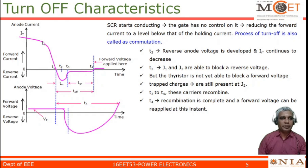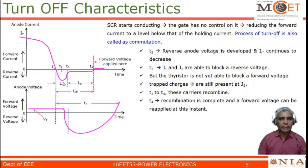At time T1, the current through the device comes to zero. However, the device is not yet fully turned off — it has its own reverse recovery time, similar to a diode. The time between T1 and T3 is what we call the reverse recovery time. At time T2, reverse voltage develops across the device and the reverse recovery current IRR begins to decrease. At T3, junctions J1 and J3 are capable of blocking the reverse voltage.